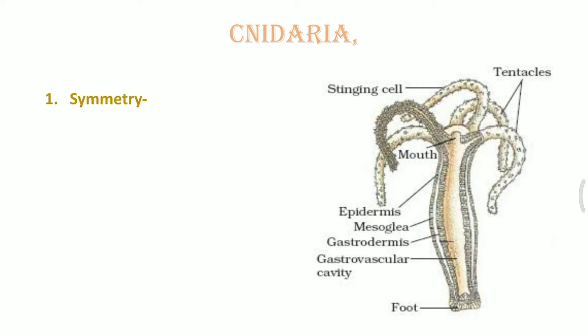The first feature is about symmetry. If you see the structure of hydra, it has an oral surface which is the mouth and an aboral surface which is the base portion. These organisms can only be divided by radial symmetry. However, the entire kingdom Cnidaria also contains some organisms which are biradially symmetrical. So generally it is radial symmetry, but at times it can be biradial as well.